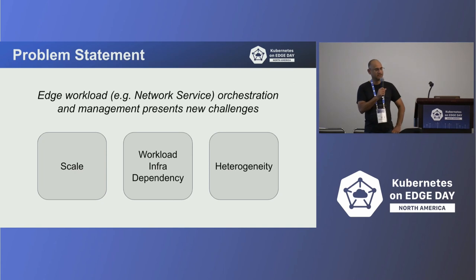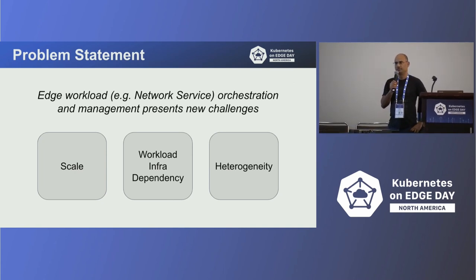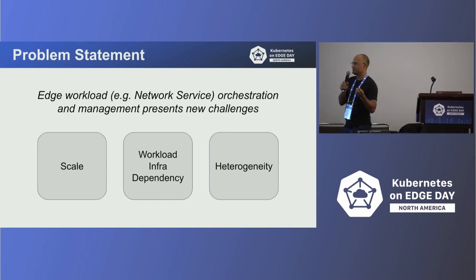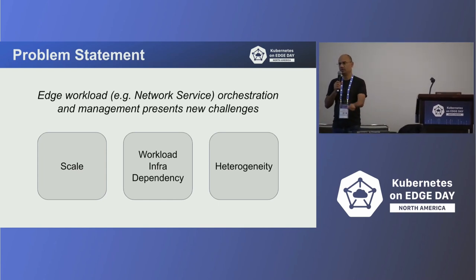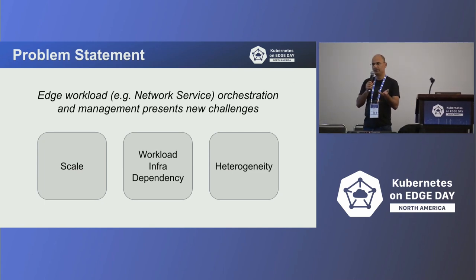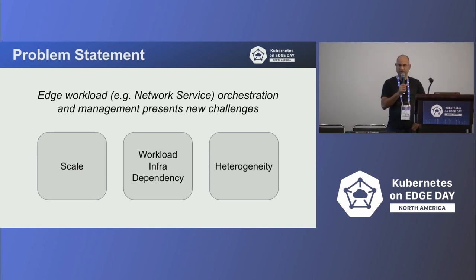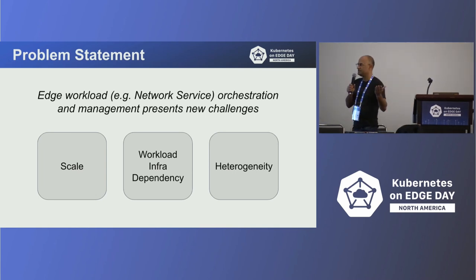The second challenge is the dependence on infrastructure that a workload has. For example, if you take a network service such as Radio Access Network, that often requires GPUs or DPUs. So you have to configure the infrastructure to suit the workload requirements.